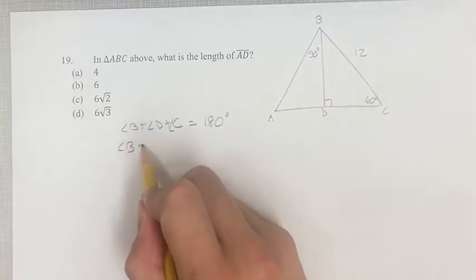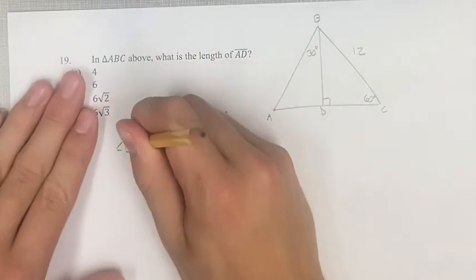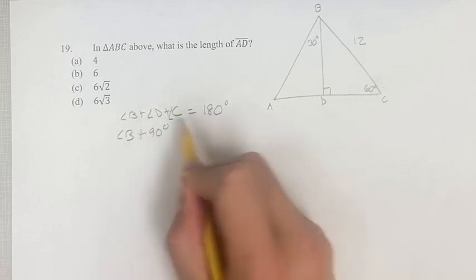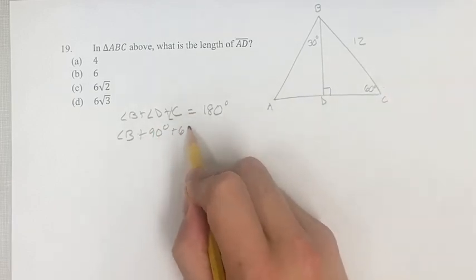So angle B, we don't know, plus angle D, we're told as a right angle, so that's 90 degrees. And angle C, we're given as 60 degrees.